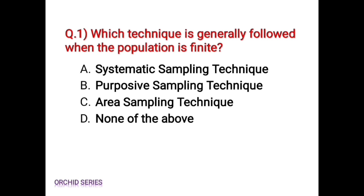The correct answer is Option A, systematic sampling technique. Systematic sampling technique is generally followed when the population is finite.